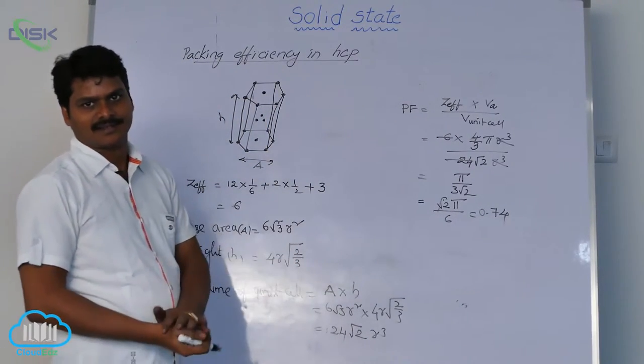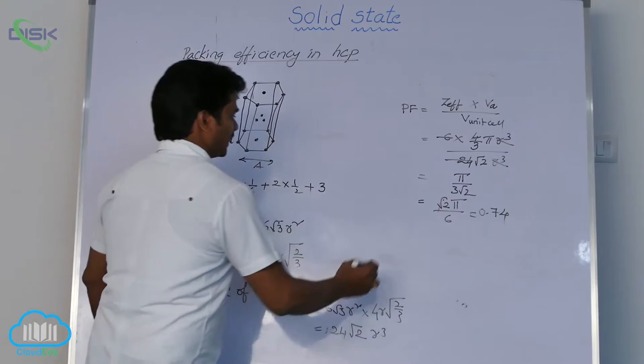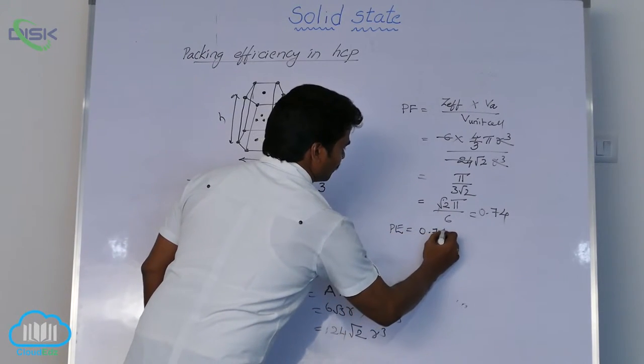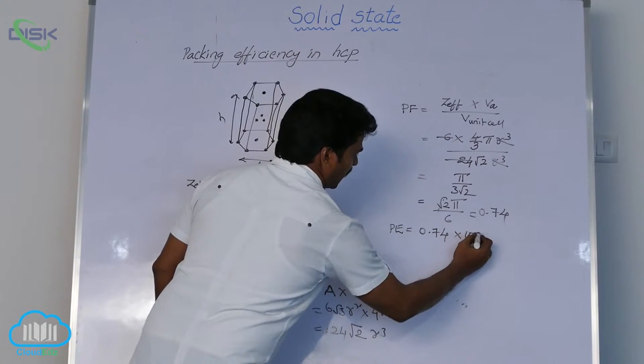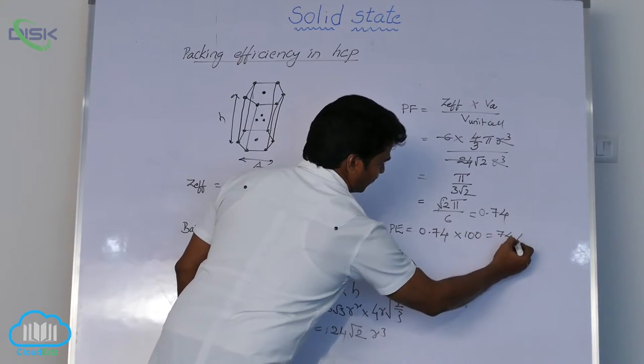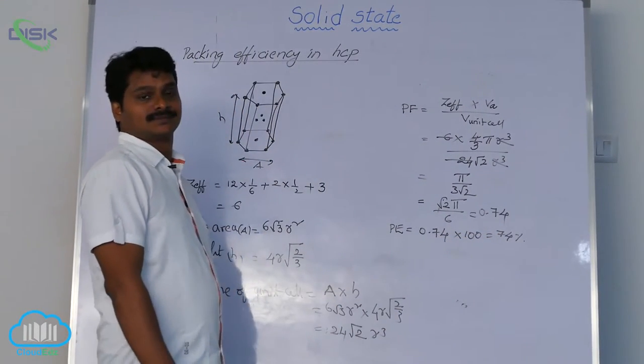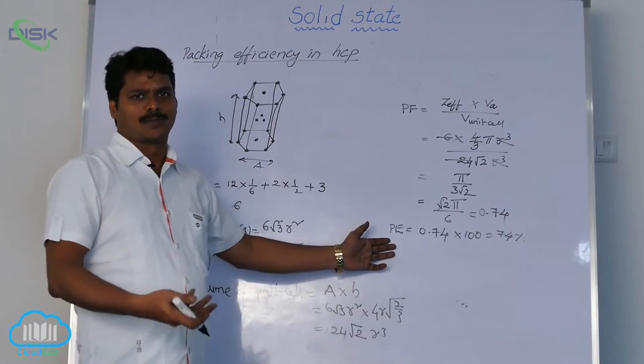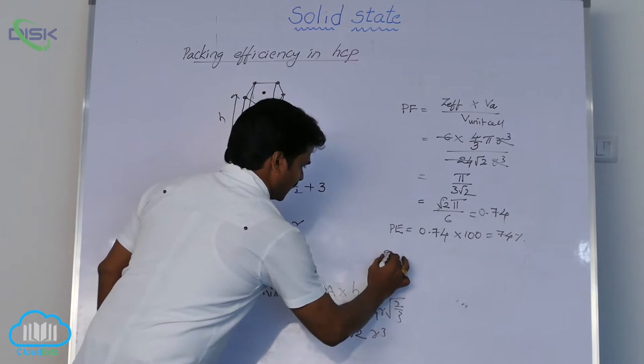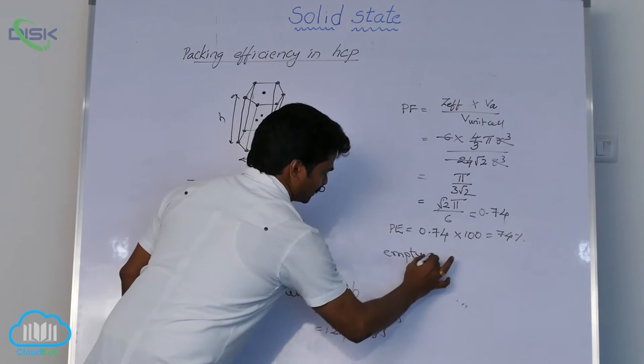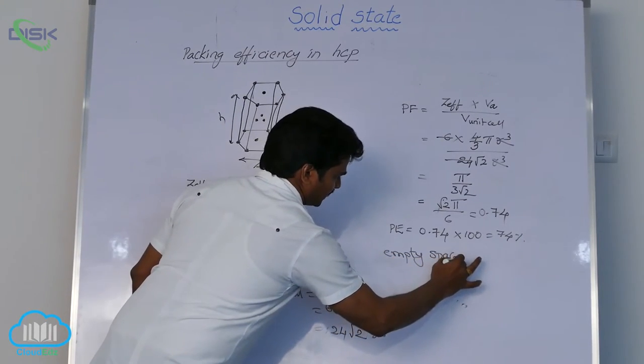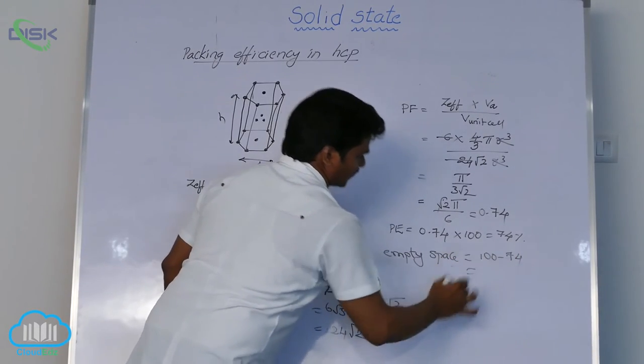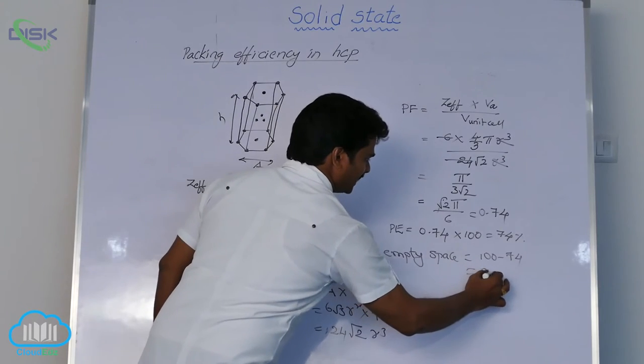Packing fraction is 0.74. Then packing efficiency is 0.74 into 100. That means here also 74 percent occupied volume. Packing efficiency means occupied volume. Then what is empty space or void space? Empty space in hexagonal system 100 minus 74, that means 26 percent.